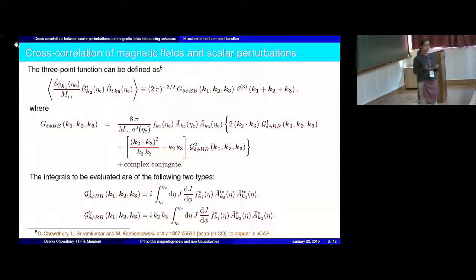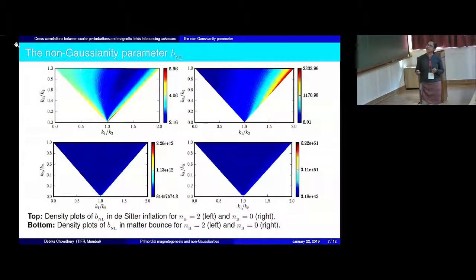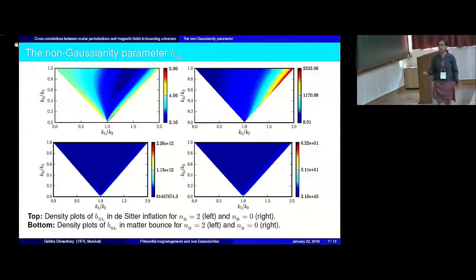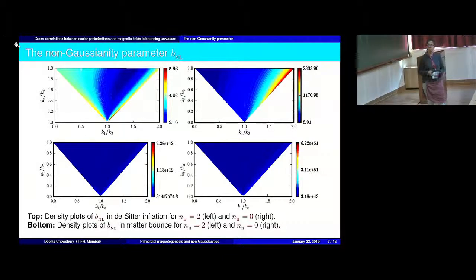Another quantity that we want to evaluate is what is known as a non-gaussianity parameter. It is basically a dimensionless combination of this three-point function to the power spectra, usually expressed as a ratio of the three-point function to the scalar and the magnetic power spectra. So we can evaluate this non-gaussianity parameter, which I have denoted as B and L, and I have plotted them here. In order to compare with what is obtained in inflation, I have plotted the inflationary B and L on the top and the B and L obtained in the bouncing scenario on the bottom, for two different cases. We see that in both of these cases the non-gaussianity parameter evaluated in bouncing scenarios is much larger than the corresponding non-gaussianity parameter obtained in the case of inflation.